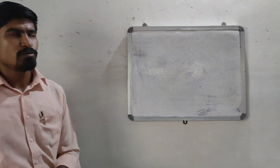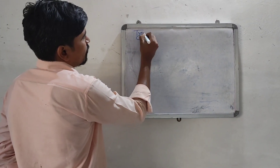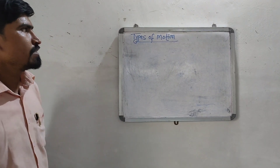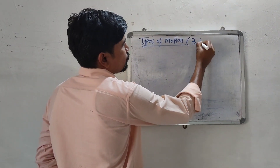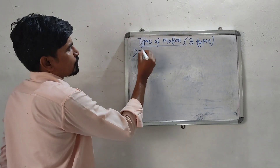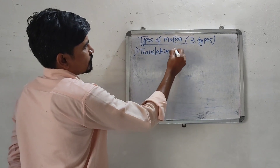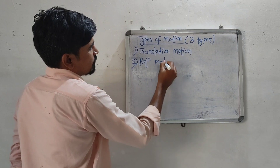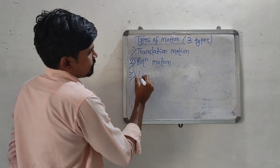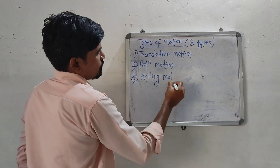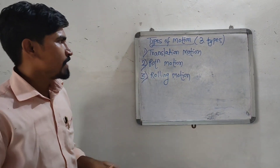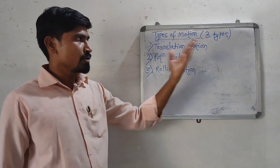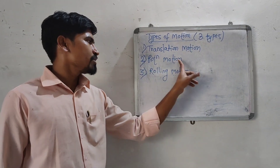Now, types of motions. There are many types of motions, but as per the syllabus, the first motion is translational motion, the second is rotational motion, and the third type is rolling motion. These three types of motions will be discussed in the next lecture.